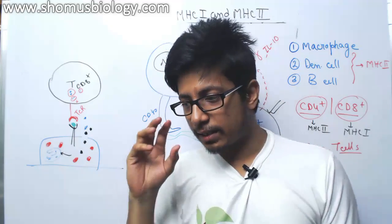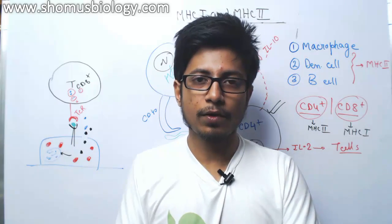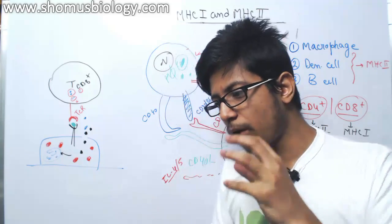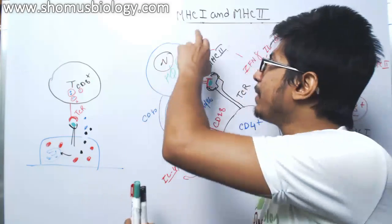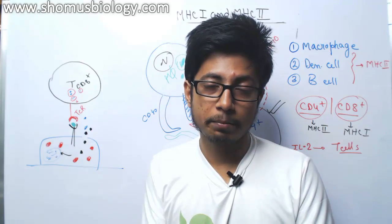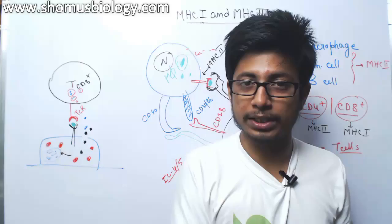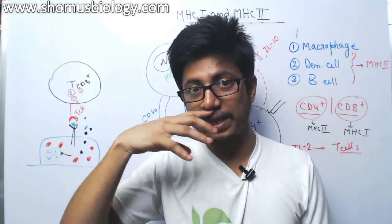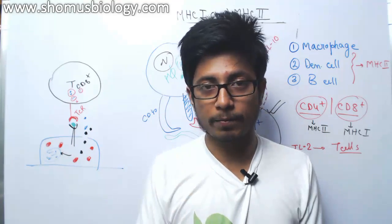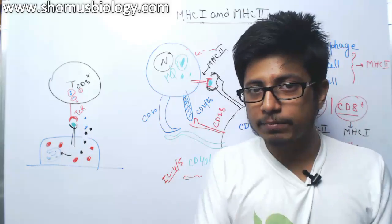That is why the name is 'major histocompatibility complex.' When these glycoproteins were first discovered, it was found during tissue grafting from one person to the next, or organ transplantation from a donor to a recipient. When transferring an organ, all the MHCs should match. Otherwise, the recipient cannot accept the donor organ, because immunity distinguishes whether something is self or foreign — and the transplanted organ is coming from outside, so it is recognized as a foreign particle.